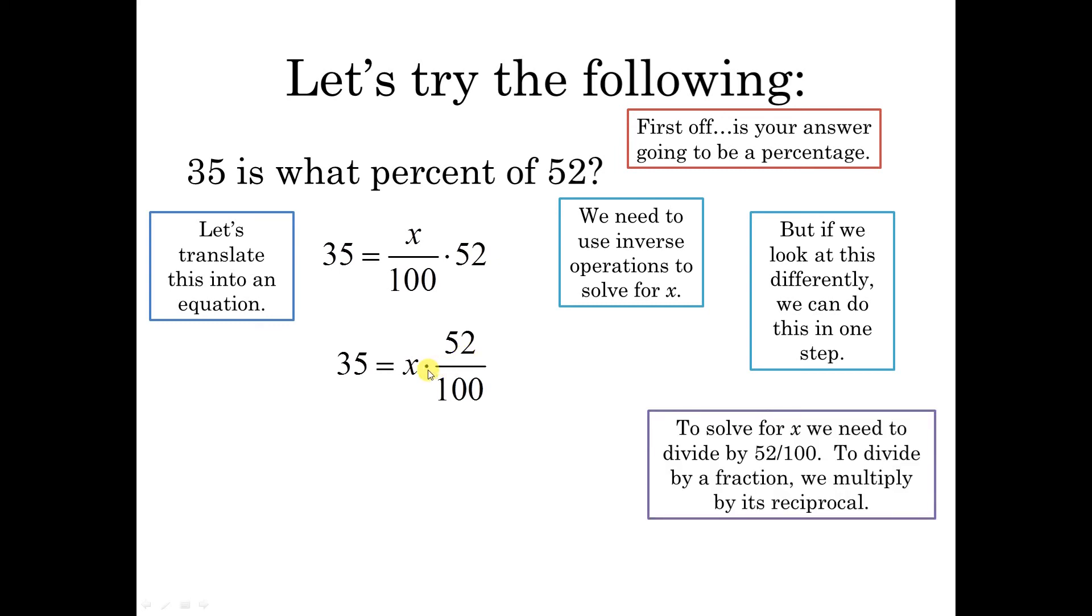So to solve this, I have to multiply by the reciprocal, 100 over 52. This equals 1, these two fractions together. And this is where you're gonna use your calculator and you're gonna get 67.3 percent.